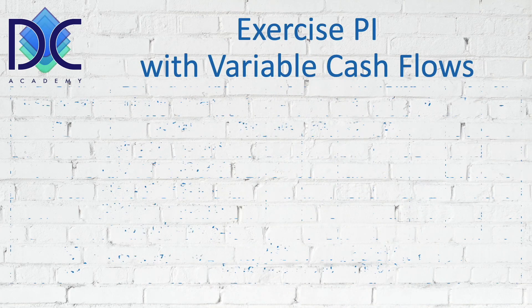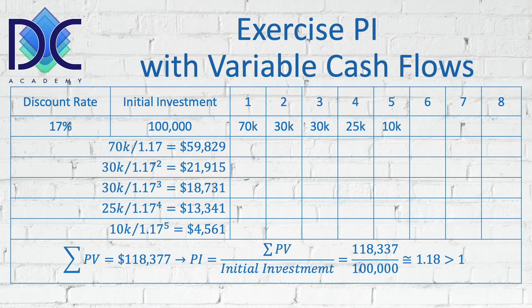Using the same table as before — a discount rate of 17%, initial investment of $100,000, and future cash flows of $70k, $30k, $30k, $25k, and $10k — the present value of all those cash flows is $118,377. When we divide this by $100,000, we find a Profitability Index of 1.18, which is larger than one, confirming a profit. This is consistent with the positive NPV we found earlier.